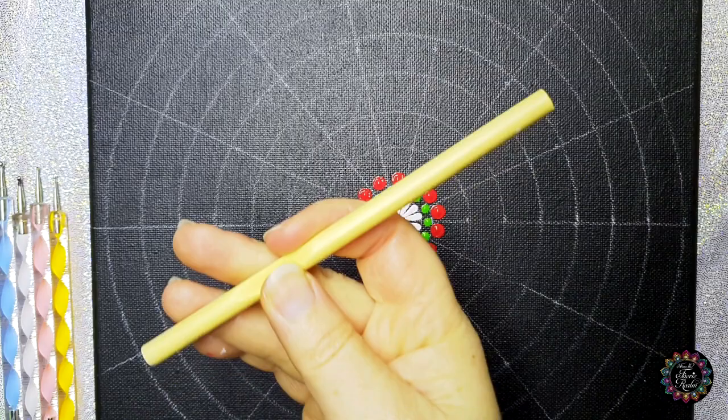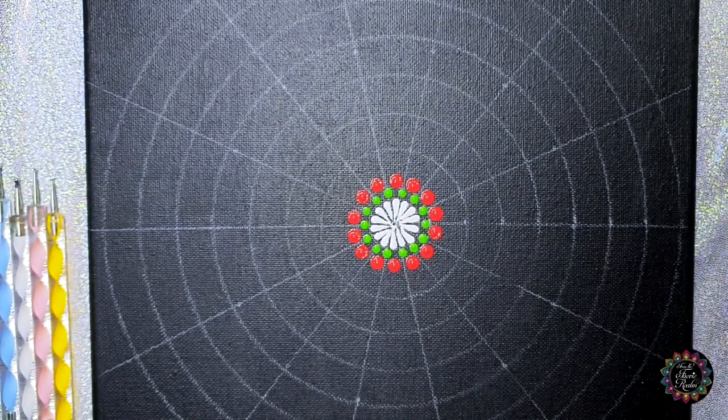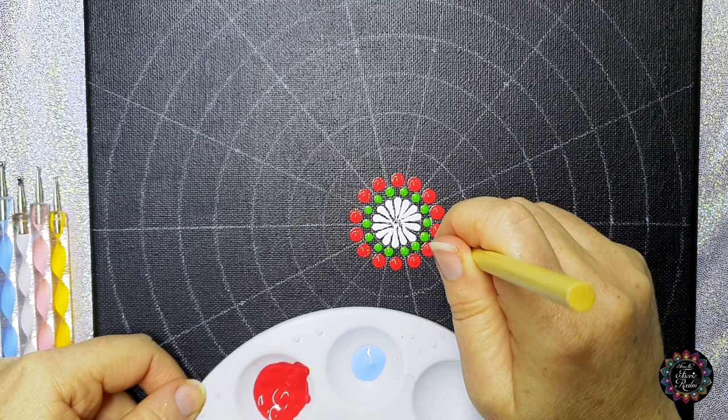Then we're going to move up to your seven millimeter tool and we are moving up to color number five, which is the blue. And now we're going to do the alternating again, so we're just jumping back onto the straight lines.